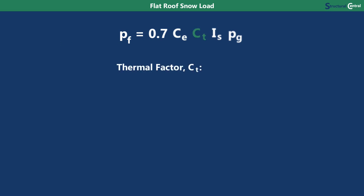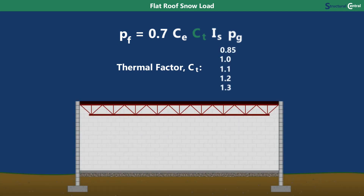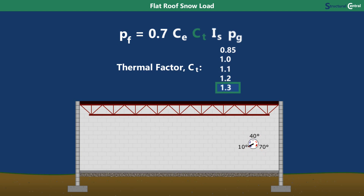Next we have CT, the thermal factor, which accounts for snow melting. The colder the roof is, the less snow will melt. CT is 1.0 for a normal heated building. It goes up to 1.1 if the temperature is kept just above freezing or if you have a ventilated roof with good insulation. 1.2 is for unheated or open-air structures. The maximum CT value of 1.3 is for freezer buildings. It is also possible to use a CT value of 0.85 for a heated greenhouse, but only if there is a warning system in case of a heating failure.